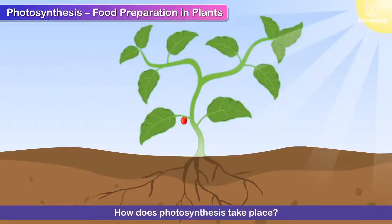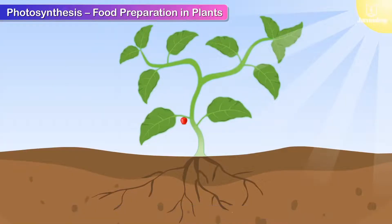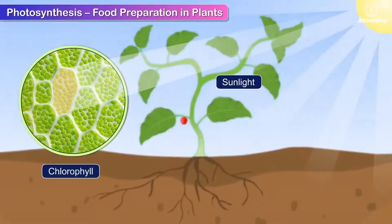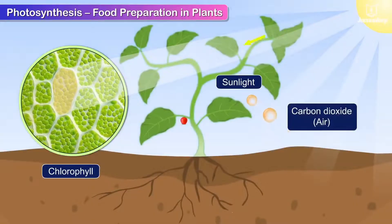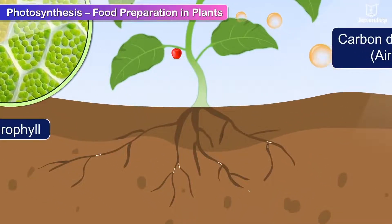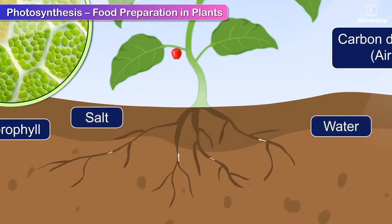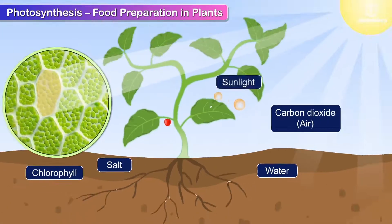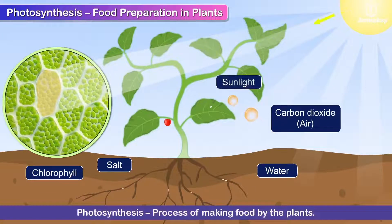How does photosynthesis take place? During the day, chlorophyll present in the leaves traps the sunlight. Leaves also take in carbon dioxide from the air. The roots absorb essential nutrients, water and salts from the soil and transport them to the leaves. The plant thus prepares food in its leaves through photosynthesis, the process of making food by plants.